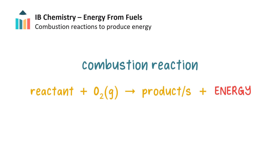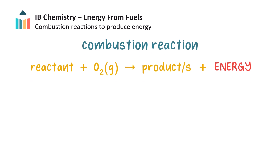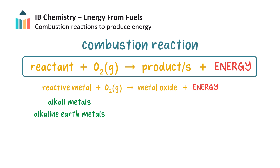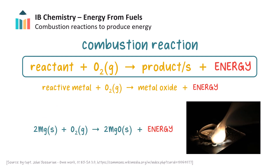Substances which tend to undergo combustion reactions include reactive metals, such as the alkaline metals and alkaline earth metals. For example, magnesium burns in oxygen with an intense white light, producing magnesium oxide.